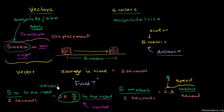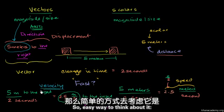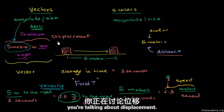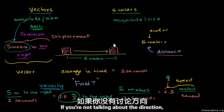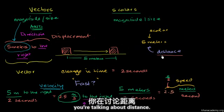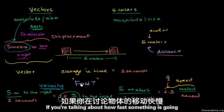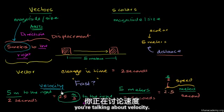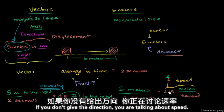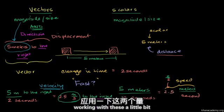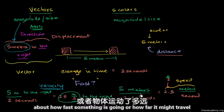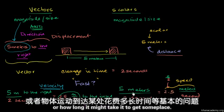So an easy way to think about it: if you're thinking about change in position and you specify the direction, you're talking about displacement; if you don't give direction, you're talking about distance. If you're talking about how fast something is going and you give the direction, you're talking about velocity; if you don't give the direction, you're talking about speed. In the next video, we're going to start working with these to solve some basic questions about how fast something is going, how far it might travel, or how long it might take to get somewhere.